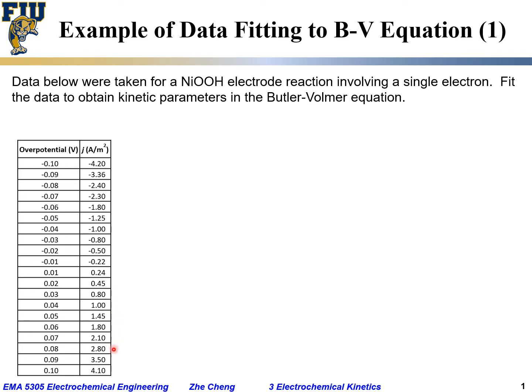So we want you to fit the data, this overpotential versus current density data to Butler-Volmer equation to obtain the kinetic parameters, which specifically in this case are the exchange current density J₀ and the symmetry factor beta.